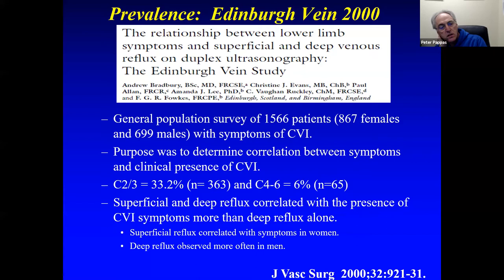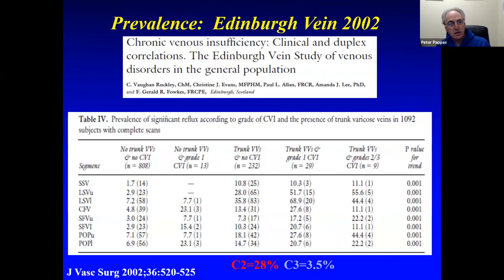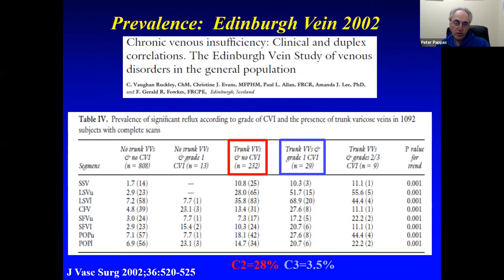He found that if there was superficial venous insufficiency or reflux, symptoms correlated closely in women, whereas symptoms in men had a higher likelihood of indicating deep venous insufficiency. This study was done prior to uniform acceptance of CEAP classification. Going through the study, trunk veins with no venous insufficiency correspond to C2 patients, and grade one would be considered C3 today. In the paper, 28% had C2 disease, 3.5% had C3, and 6% had C4 disease in the general population.